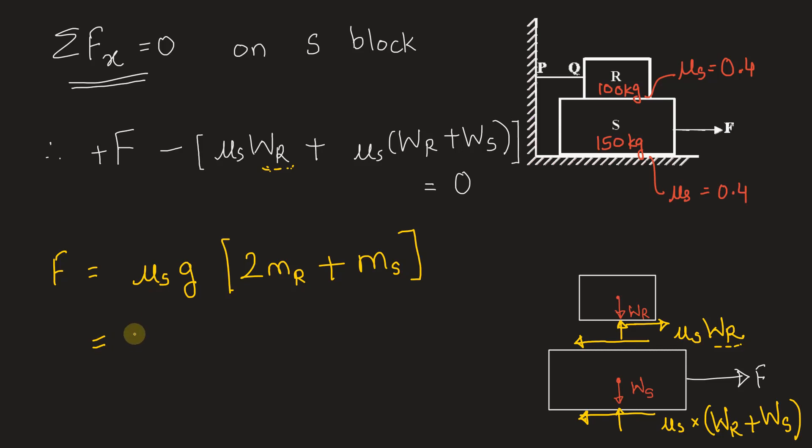Let's put the values. Mu S is 0.4, G is 9.81 into 2MR. MR is 100 into 2, 200 plus 150. So this is 350.